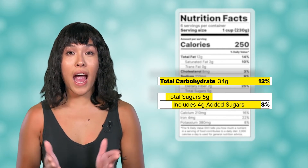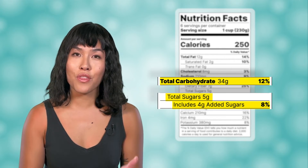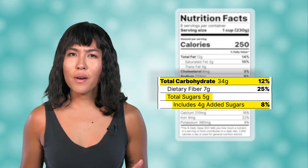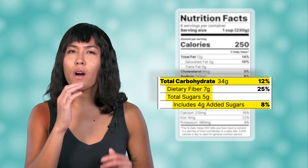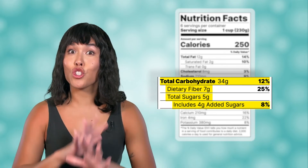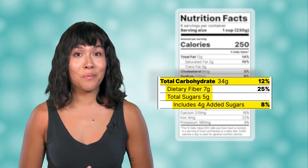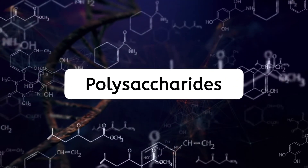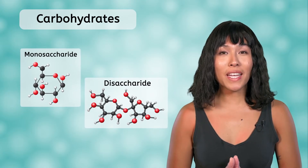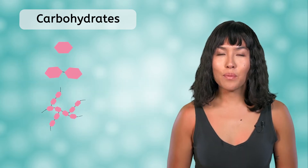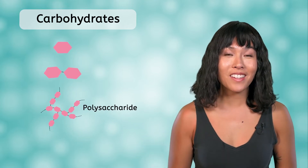Five grams of that is simple sugars, like the ones we just discussed. Four of the 5 grams were added by the food manufacturer, meaning that 1 gram of simple sugars occurred naturally in the food. But what about the other category listed below carbohydrates? Fiber. And why don't the subcategories add up to the total carbohydrates value? Well, it turns out that not all carbohydrates are simple sugars. To simplify our carbohydrate models, we can replace the sugar rings with hexagons. We'll need that simplification to show carbohydrates made of many monosaccharides bonded together, called polysaccharides.